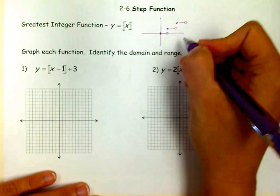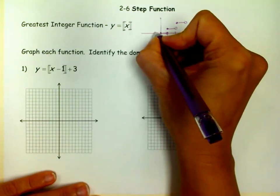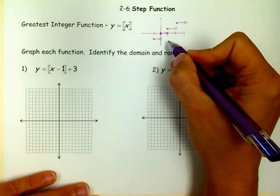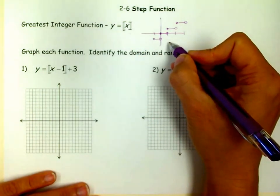Greatest integer function means that, well, this would be 1, 2, 3, kind of thing. Here, so if you know that this is what it's supposed to look like, that's really important.